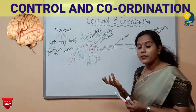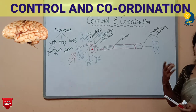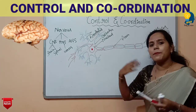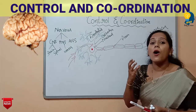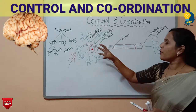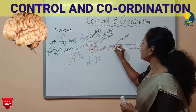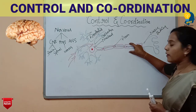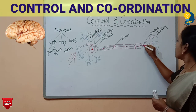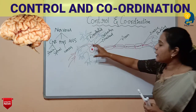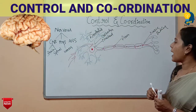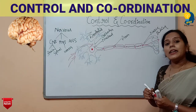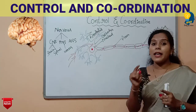The dendrites send the message to the cell body. The cell body consists of the nucleus and other cell organelles like mitochondria and Golgi body. The cell body receives the electrical impulses, which then travel along the axon. The electrical impulses travel along the axon and finally reach the nerve ending, where they are converted back into chemicals.